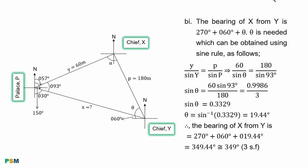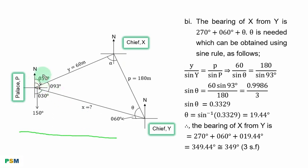The solution continues with the labeled diagram. From the north to S is 057 degrees, and from the north to Y is 150 degrees. To get the angle at P between PS and PY, you have 150 degrees minus 057 degrees, which equals 093 degrees.